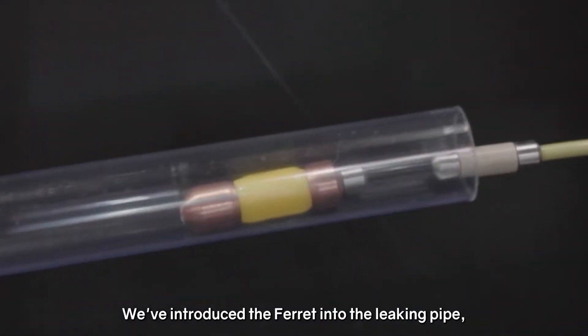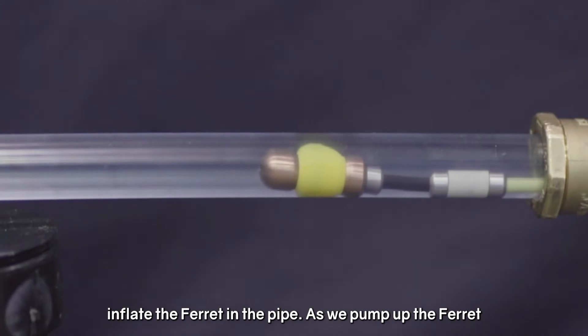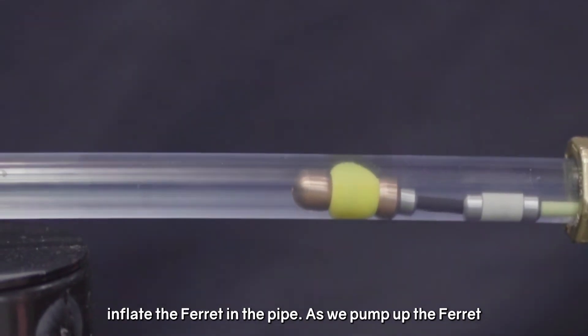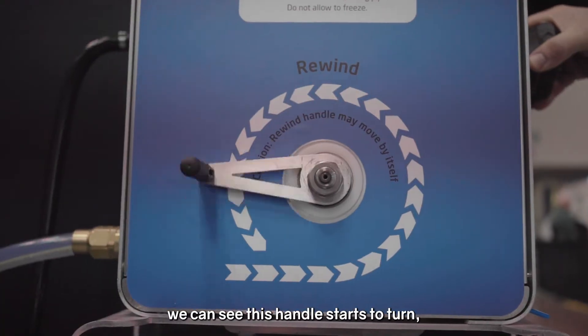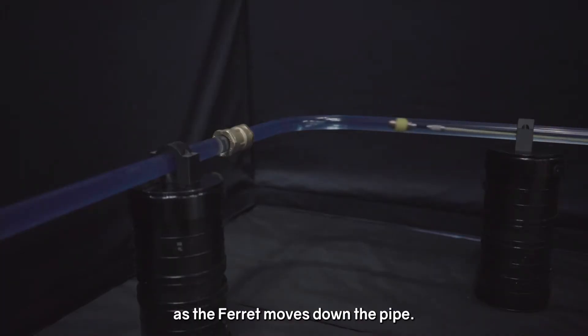We've introduced the ferret to the leaking pipe, inflate the ferret in the pipe and as we pump up the ferret we can see this handle start to turn as the ferret moves down the pipe.